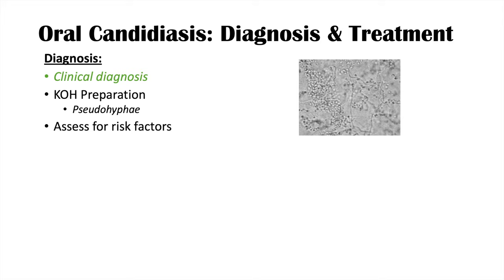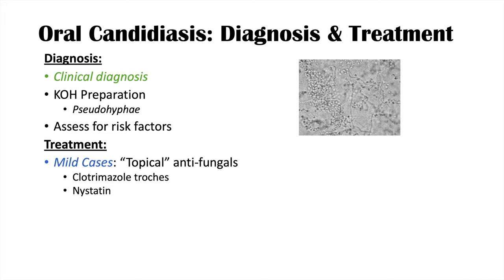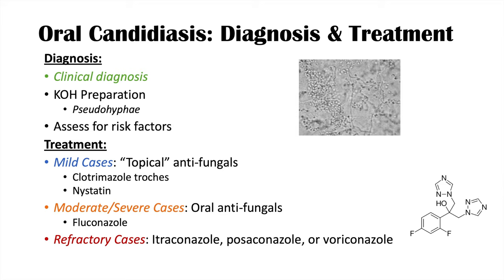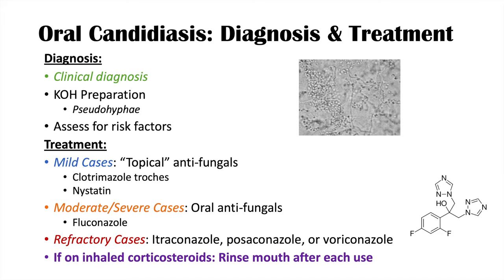Mild cases of oral candidiasis are treated with topical antifungals such as clotrimazole troches or nystatin. Moderate and severe cases require oral antifungals like fluconazole. Refractory cases that don't respond to fluconazole are treated with other azoles such as itraconazole, posaconazole, or voriconazole. Importantly, patients taking inhaled corticosteroids should rinse their mouth after each use to prevent future cases of oral thrush.